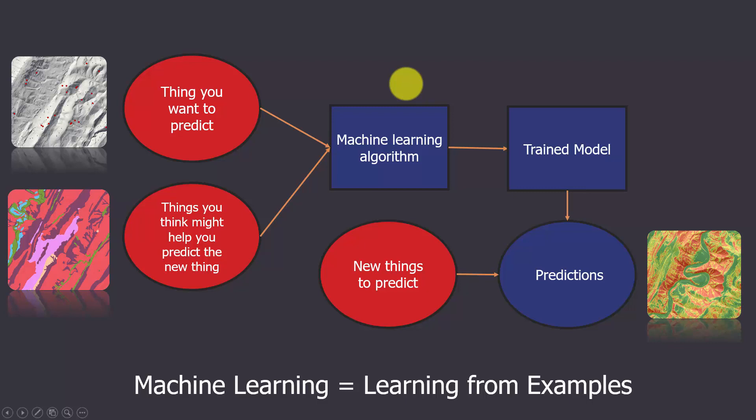All right, so this is the general process that we follow in order to do prediction from training samples. So you're trying to predict something. So there's something that you want to predict. And you don't actually know the values of that thing in your area, but you have other information that might help you predict it. So you're going to have a set of variables that you think are correlated or could potentially use to predict the thing you're interested in.